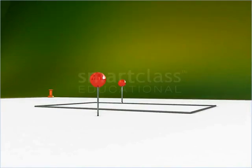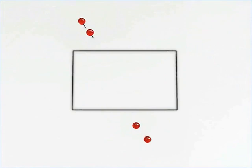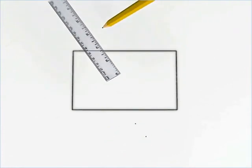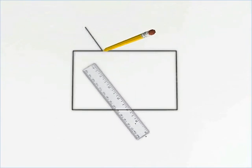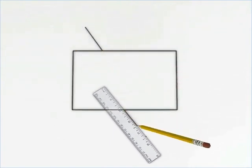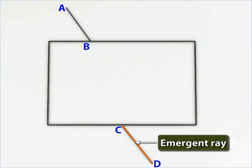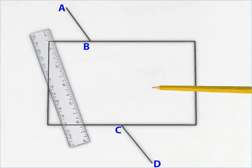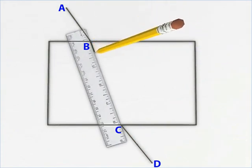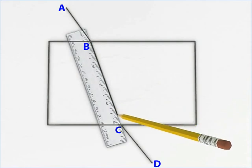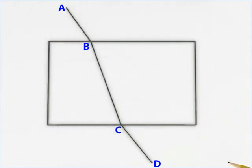Remove the glass slab and all the pins. Draw straight lines passing through the two pairs of pin marks as shown. The straight line AB serves as the incident ray and the straight line CD serves as the emergent ray. Join the points B and C. The straight line BC serves as the refracted ray.